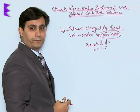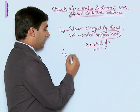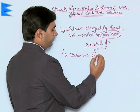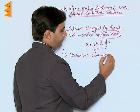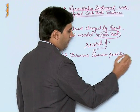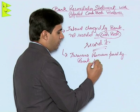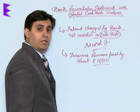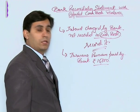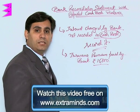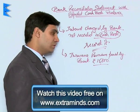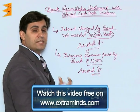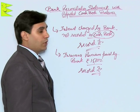Similarly, it can be insurance premium paid by bank — say rupees 15,000. The bank has paid 15,000 but you have not recorded it in the cash book, which is why it is leading to a mismatch in the balances. So just record it. Once you know that you have not recorded it, you should record it.